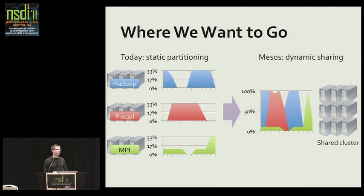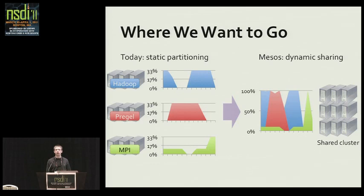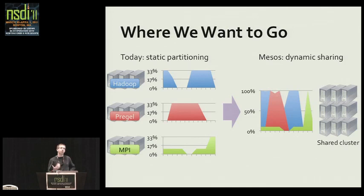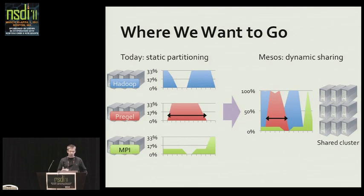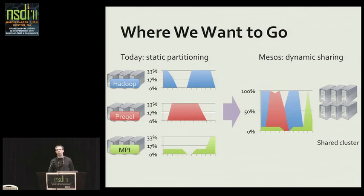Today, all these frameworks are developed independently and every framework assumes it owns a set of nodes. The only real way to share a cluster is to statically partition it among physical or virtual machines — you cut out a slice for each framework. The downside is poor statistical multiplexing: frameworks might have peaks in demand at different times, leaving a lot of resources idle. With Mesos, we move to a world where all frameworks can share a common resource pool dynamically, getting good statistical multiplexing so jobs finish faster and you can run more workload on the same nodes.